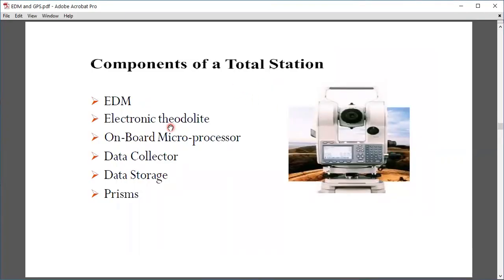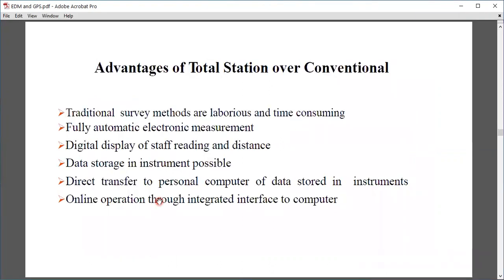Components of a Total Station: EDM, electronic theodolite, on-board microprocessor, data collector, data storage, and batteries. Advantages of Total Station over conventional traditional survey methods: traditional methods are laborious and time-consuming. Total Station is fully automatic with electronic measurement, digital display of staff readings and distance, data storage in the instrument, direct transfer to personal computer, and online operation to integrated computers.